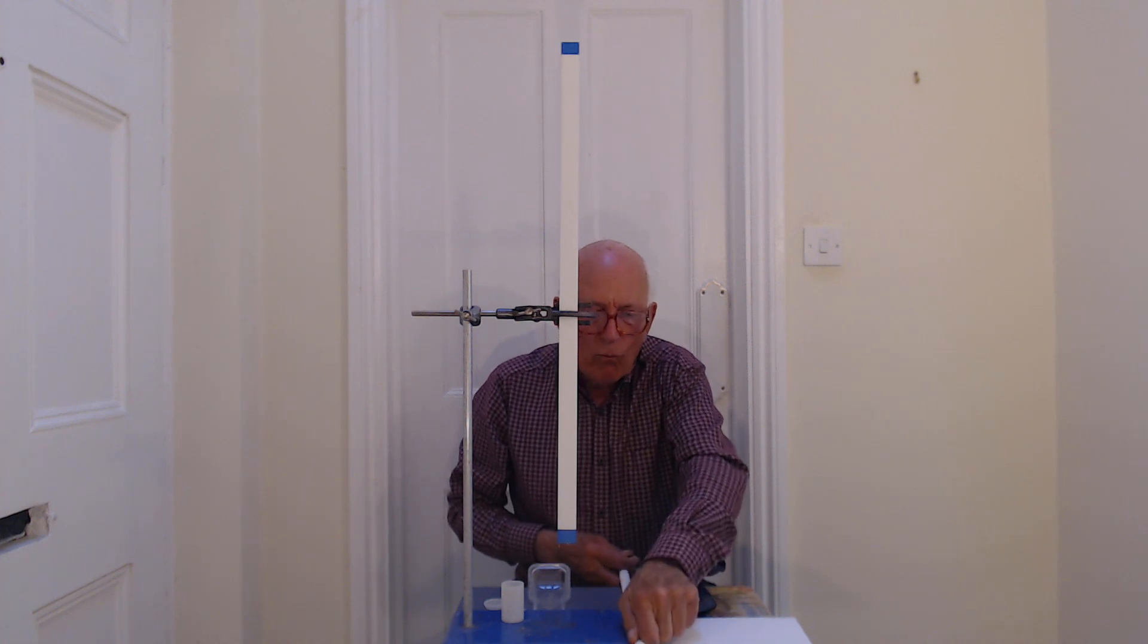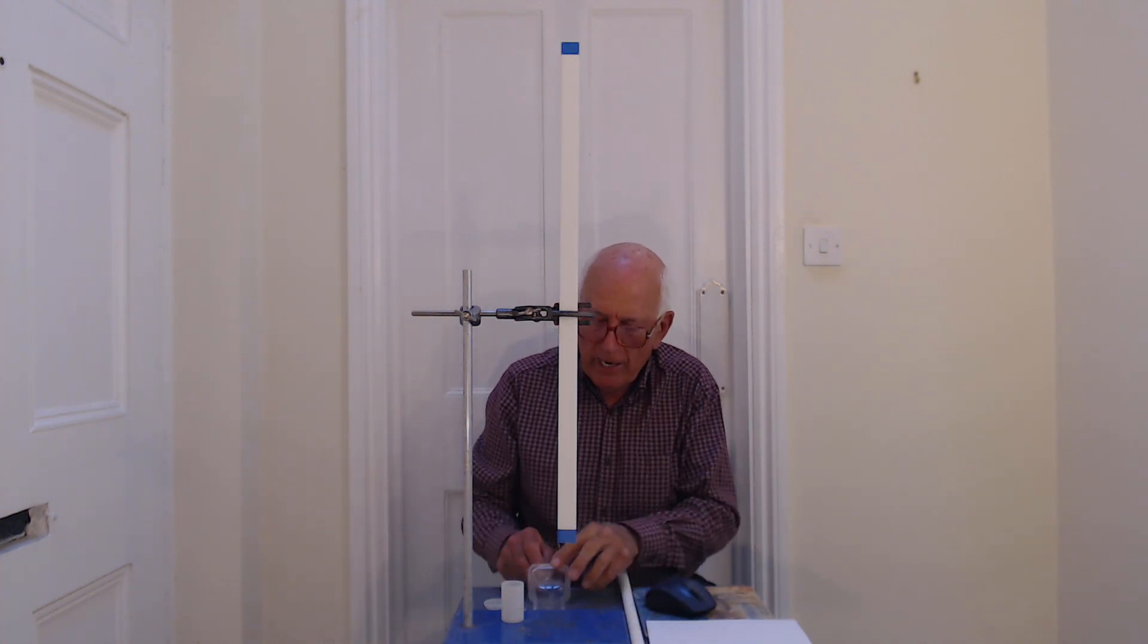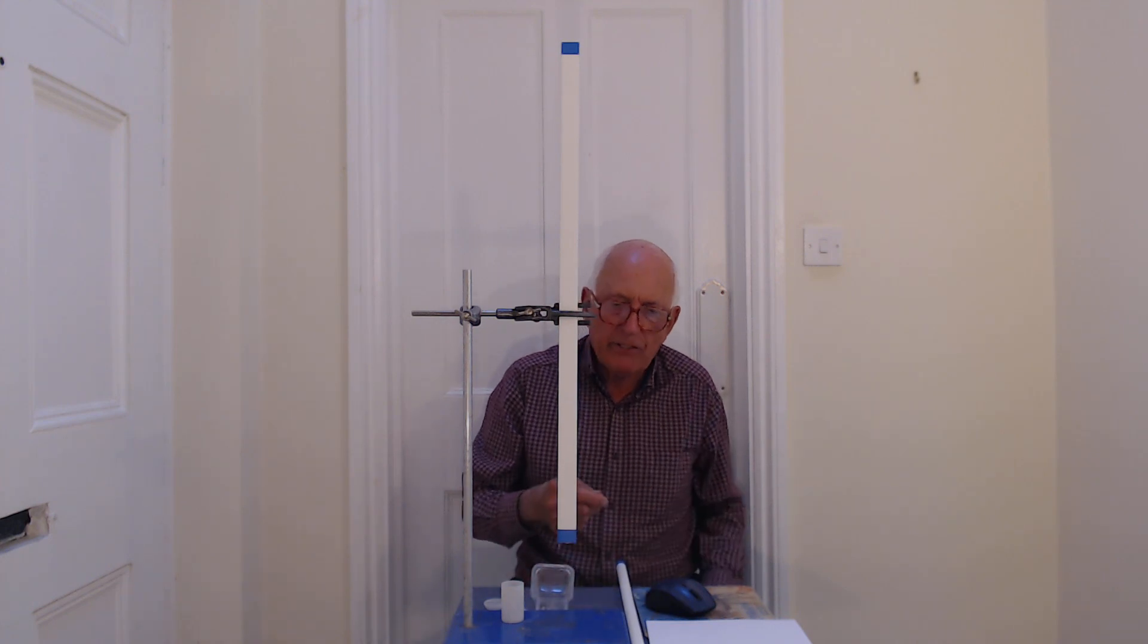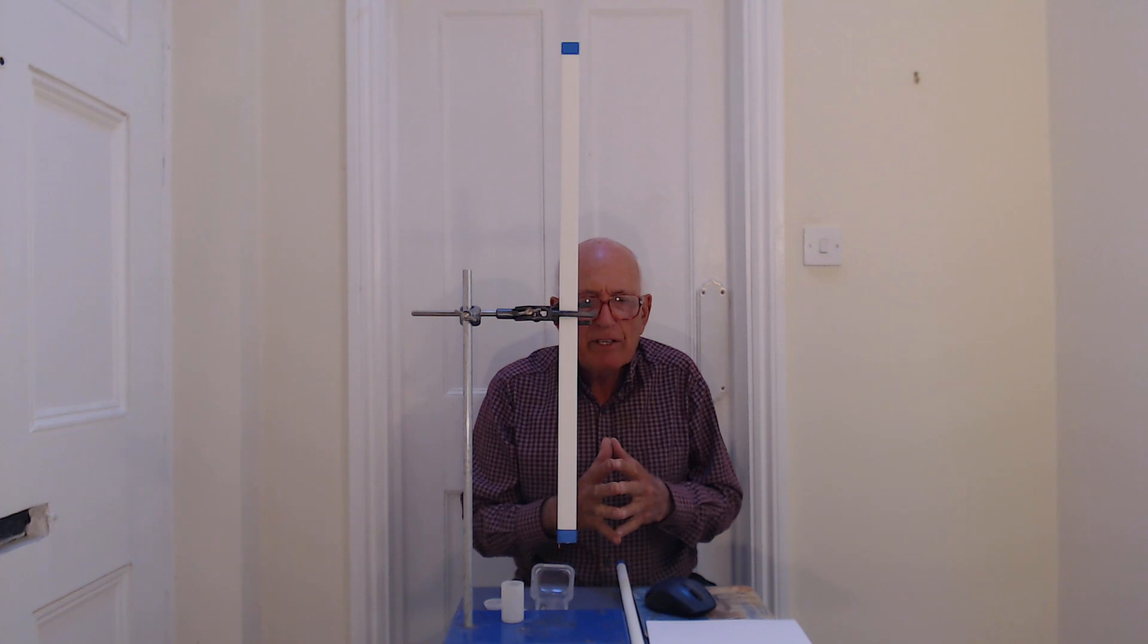Anyway, when the magnet moves down the tube, something happens. And as you probably know, if you have a magnet and you move it in and out of a coil, you get an induced voltage.